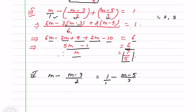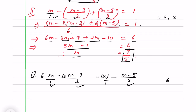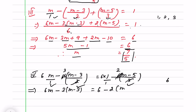One more method: I write the same question m minus (m minus 3) by 2 equals 1 minus (m minus 5) by 3, and whatever the LCM is, we multiply each term by it. The LCM is 6, so I multiply every term by 6. 6 divided by 2 is 3, so that cancels giving 3(m minus 3). 6 divided by 3 is 2, giving 2(m minus 5). Opening the brackets: 6m minus 3m plus 9 minus 2m plus 10.